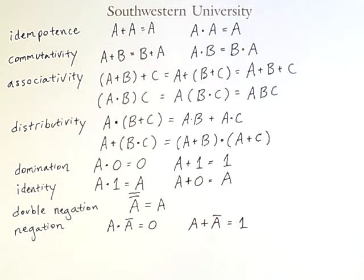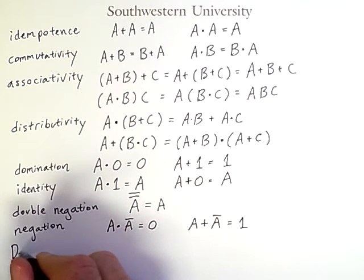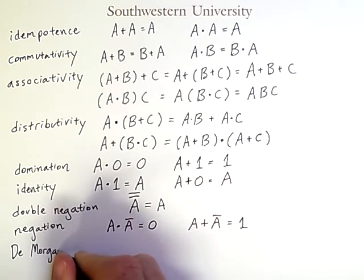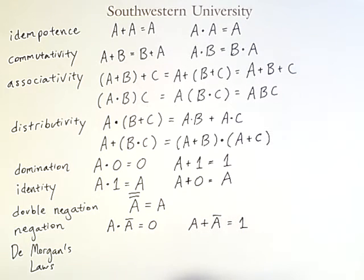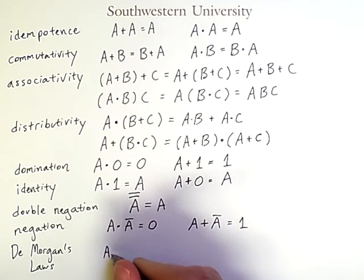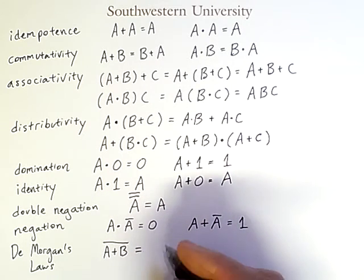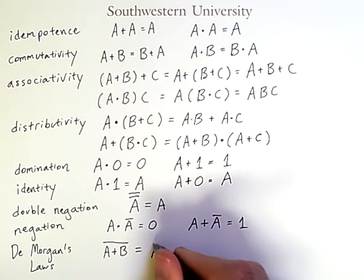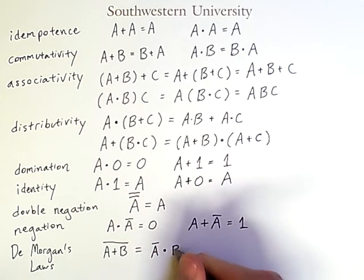Now the last two laws I'll show you are ones that you definitely or most likely have not seen before. You certainly have not seen them in the context of regular algebra. But they are very important laws known as de Morgan's laws. They are sort of like a method for distributing a negation except it isn't quite as simple as that. There are two laws. One says that the negation of A OR B is equal to the negation of A AND the negation of B.